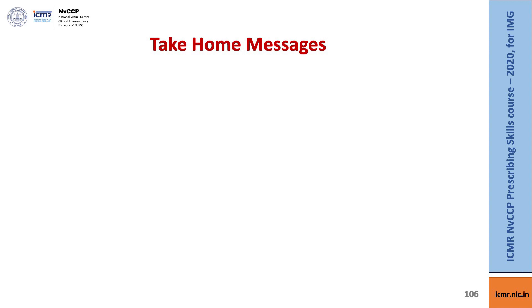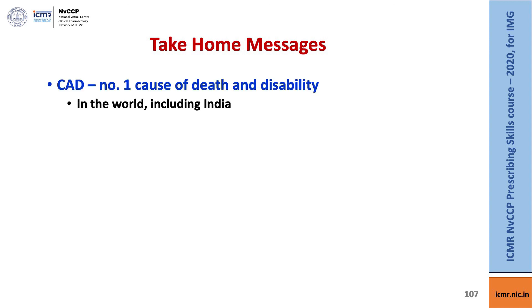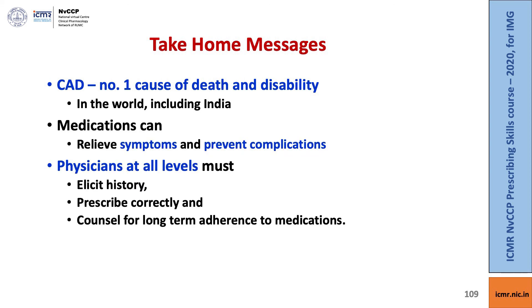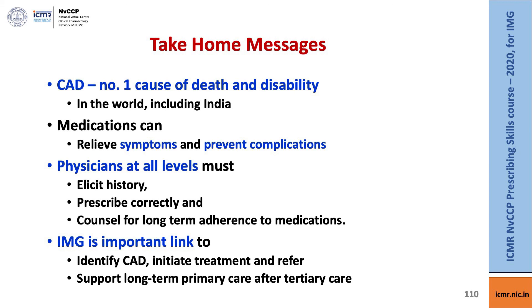Let's now conclude with a few take-home messages. Coronary artery disease is the number one cause of death and disability in the world as well as in India. Medications can relieve symptoms and prevent complications. Physicians at all levels, particularly at the primary care level, must be able to elicit history — particularly past history — and figure out what complications the patient has had. Prescribe medications correctly and counsel for long-term adherence. The Indian medical graduate is an important link to identify coronary artery disease, initiate treatments, and refer to a higher center. When a patient returns to a primary care center after treatment at a higher center, the physician must be able to support long-term primary care.